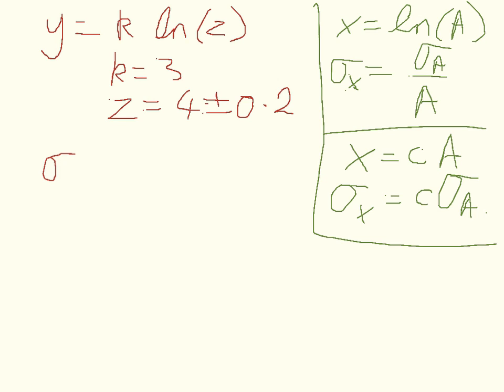So we can say that sigma y is going to be k times the error in log z. That's using this equation here for the constant. So the uncertainty in y is just k times the uncertainty in this whole thing. We'll give it another name. Then we can also use the equation up here. And we'll find that the standard deviation in log z is standard deviation in z over z.